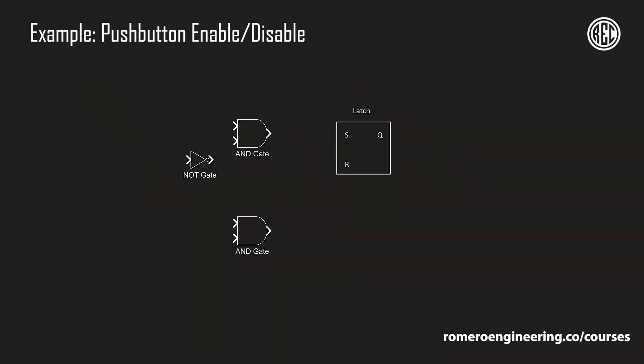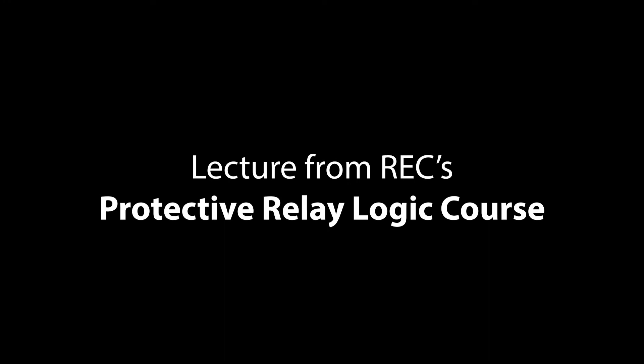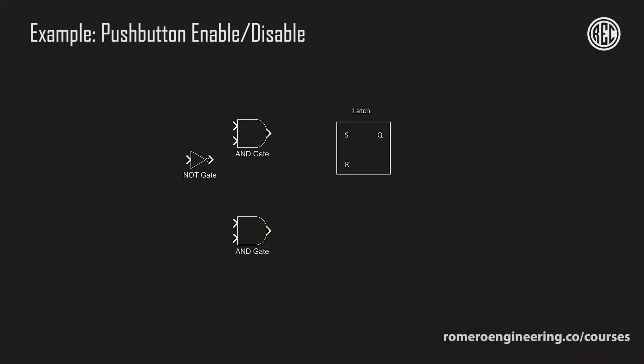Welcome to section 3 of the course, where we're going to be taking a look at different examples on how we can use logic in protective relays. We're going to begin with an example on how to use latches and relay push buttons to enable and disable certain protective functions or schemes.